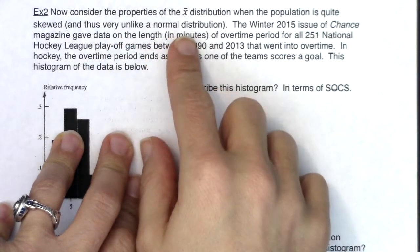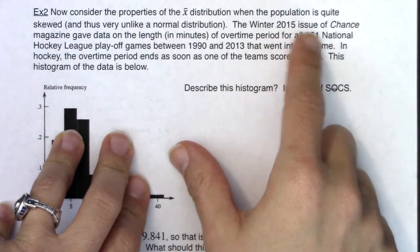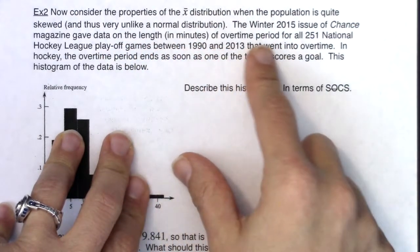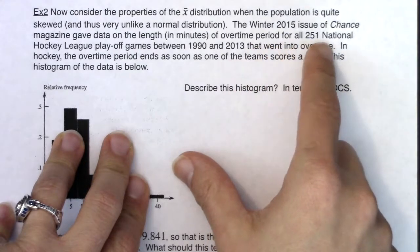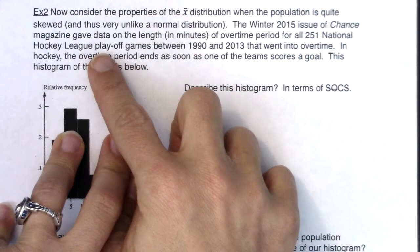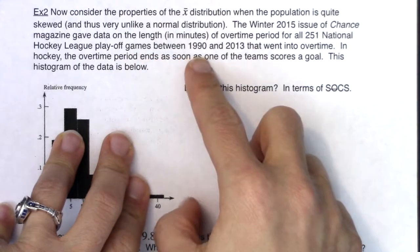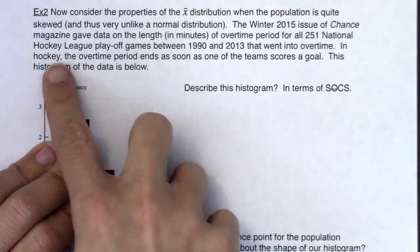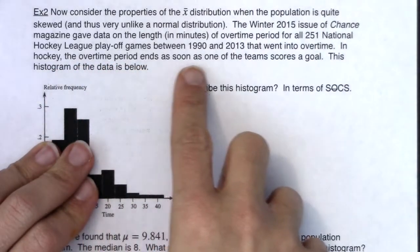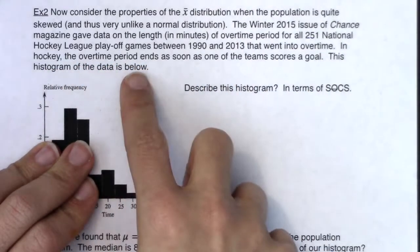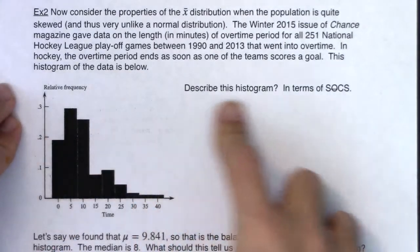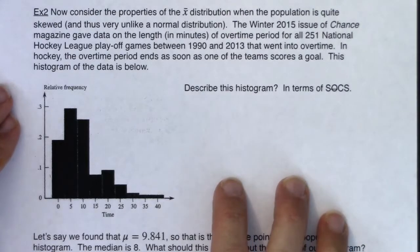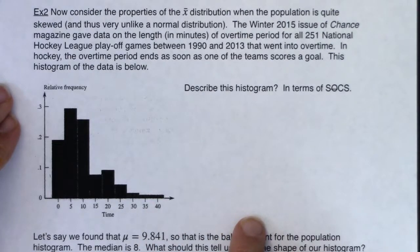The winter 2015 issue of Chance Magazine gave data on the length in minutes of the overtime period for all 251 NHL playoff games between 1990 and 2013 that went into overtime. In hockey, the overtime period ends as soon as one of the teams scores a goal. The histogram of the data is given below — describe the histogram in terms of SOCS, and we're going to ignore outliers for right now since we don't have the raw data.